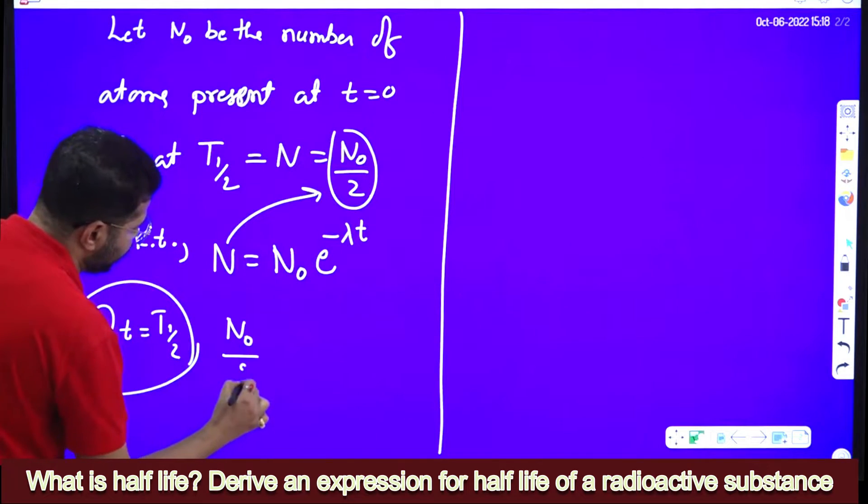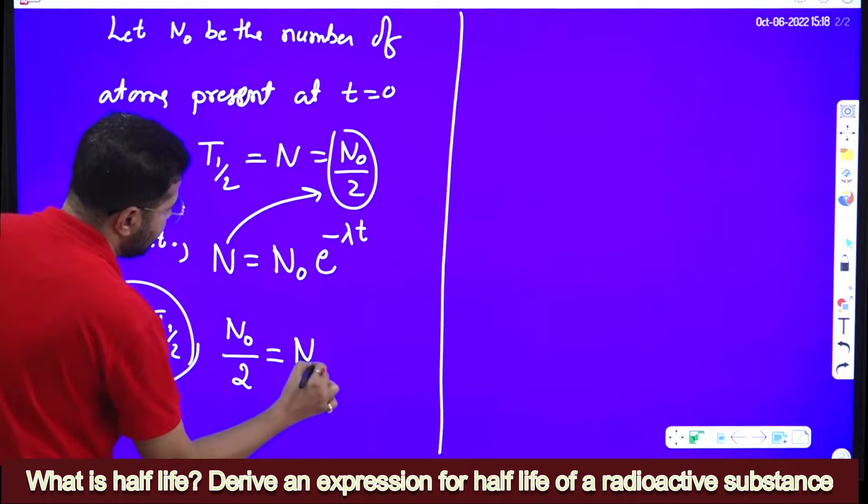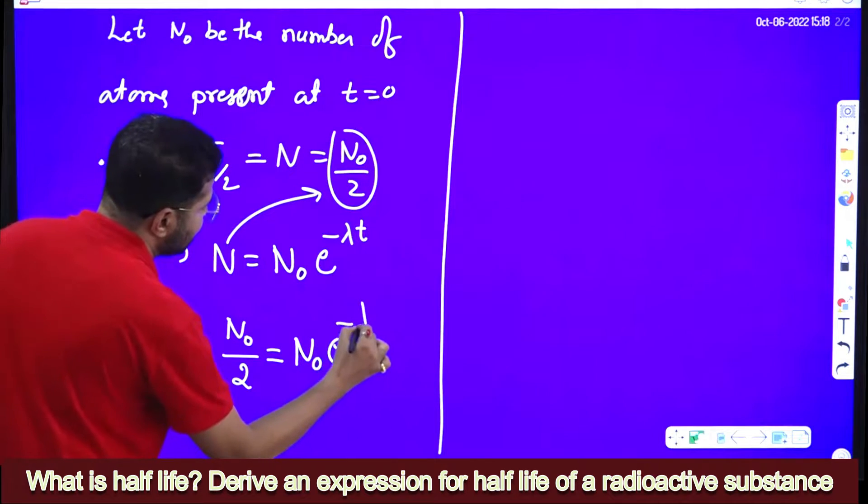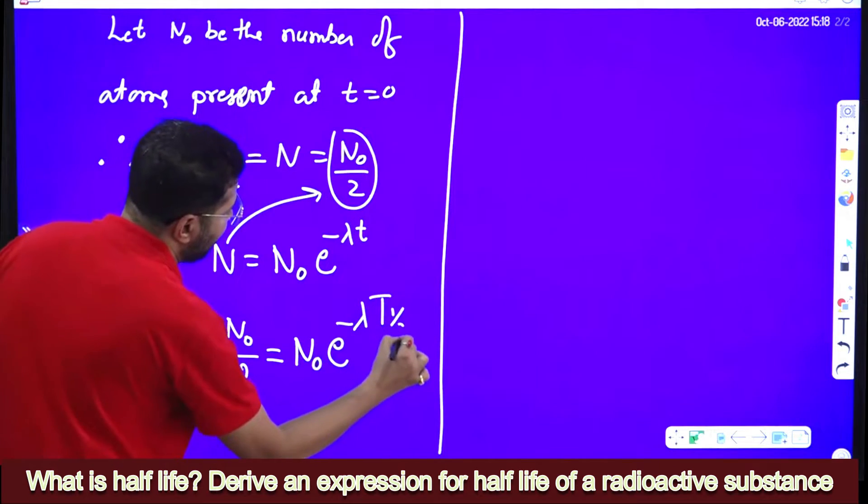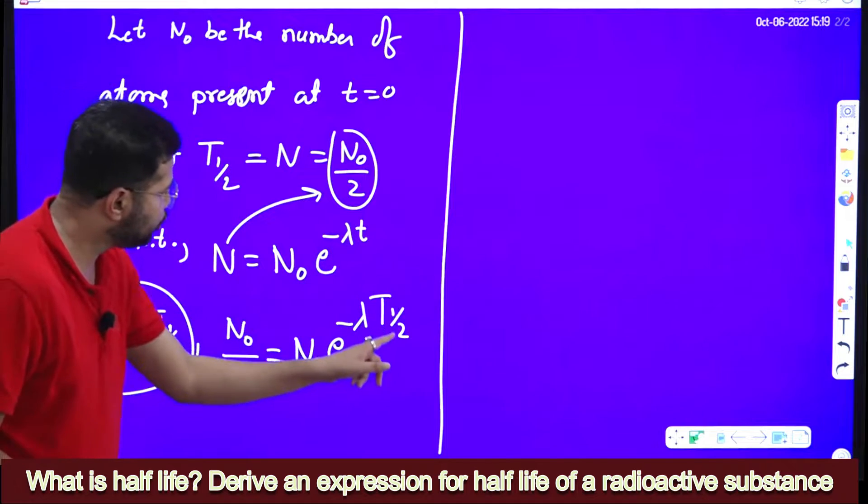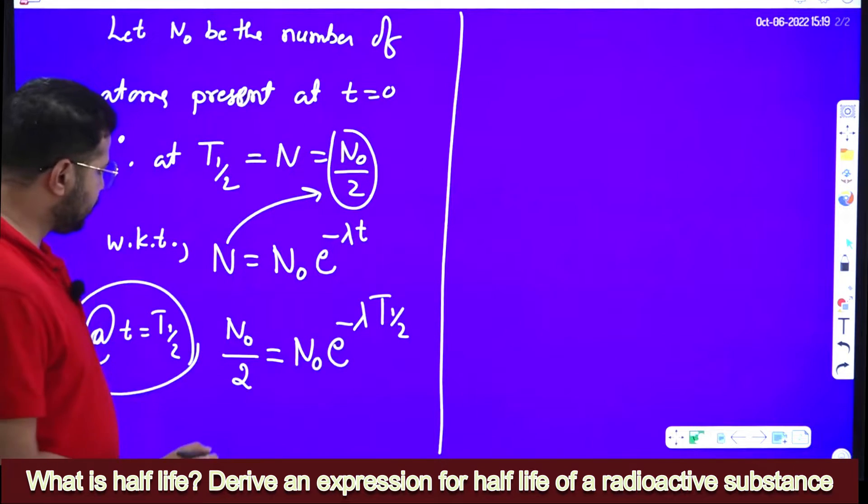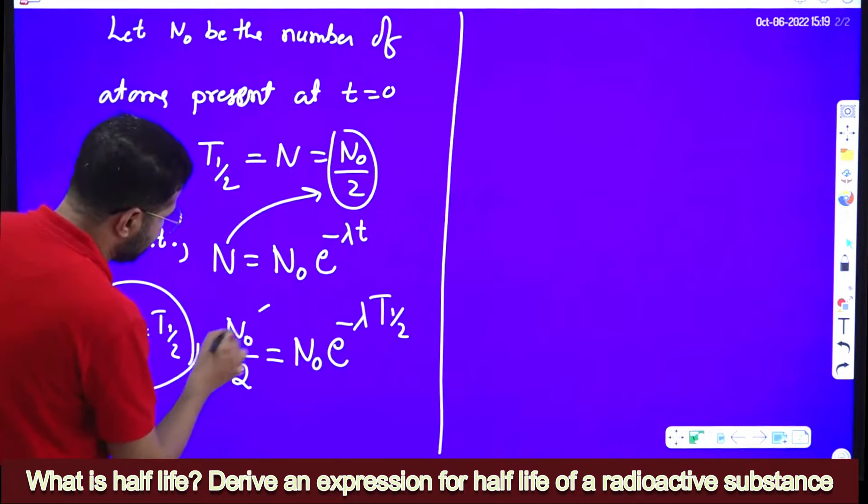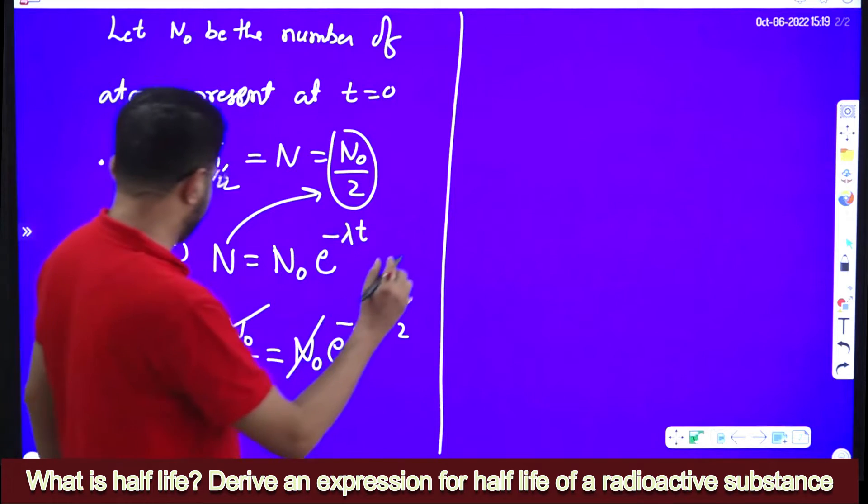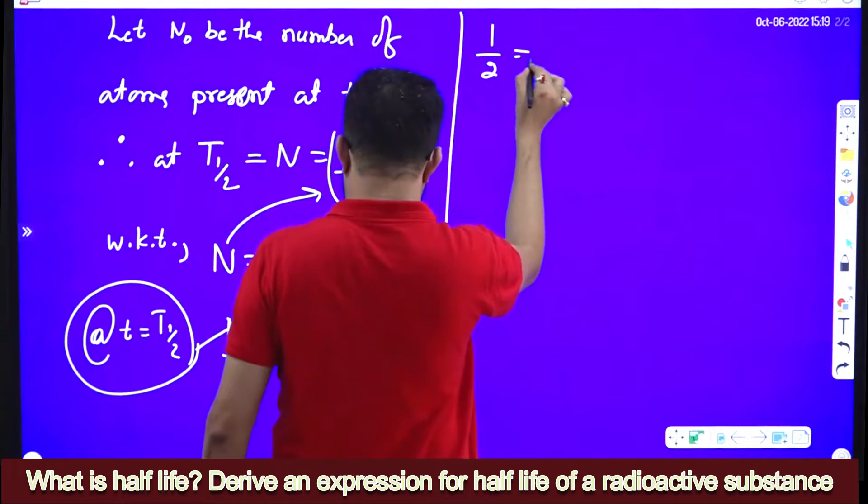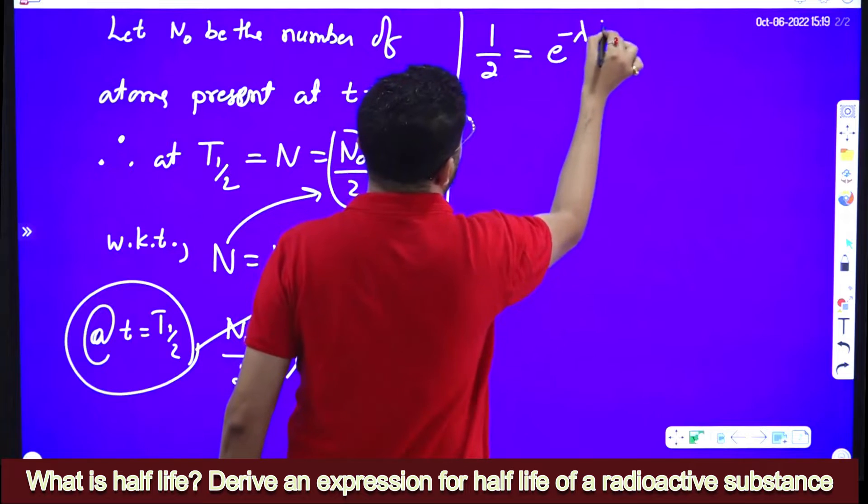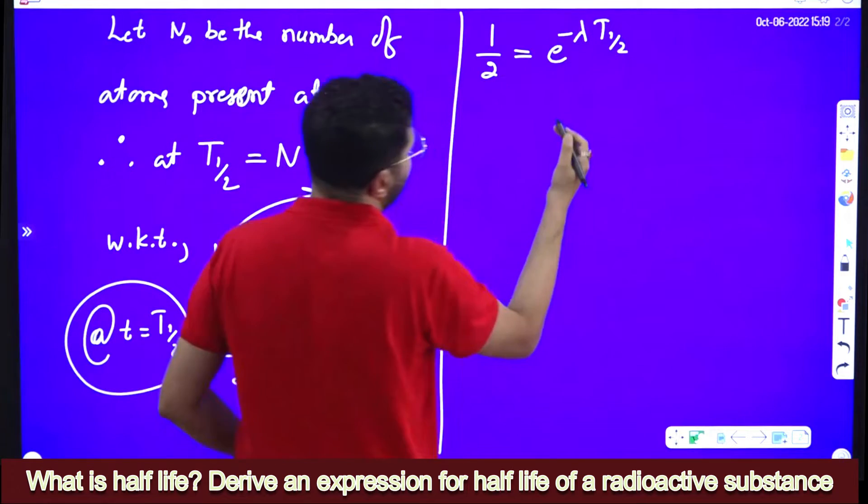So N naught by 2 is equal to N naught into e to the power minus lambda into t half, because at t is equal to t half, N is equal to N naught by 2. So what happens? This N naught and N naught gets cancelled.